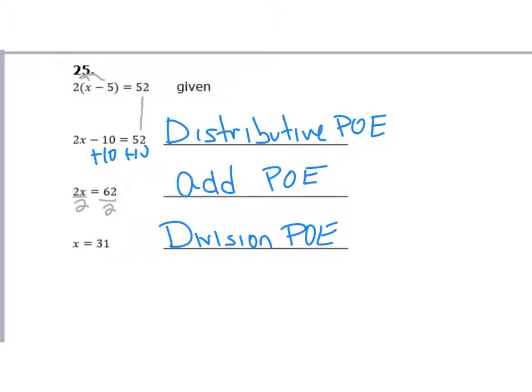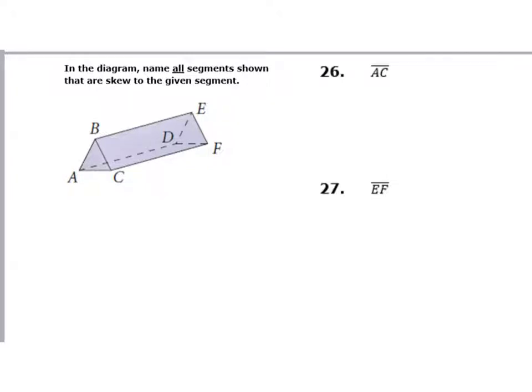Number 26: in the diagram, name all segments shown that are skew to the given segment. Note that 26 and 27 go with the same picture. It says to name all segments skew to segment AC. If I look at all my other segments: AB, BC, BE, AD, ED, EF, DF.